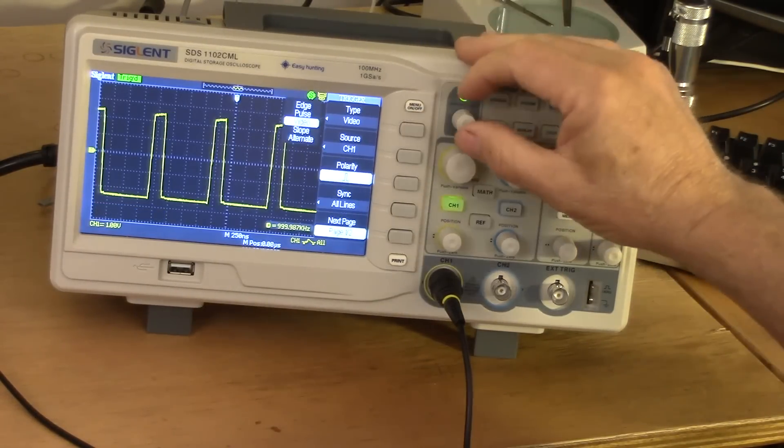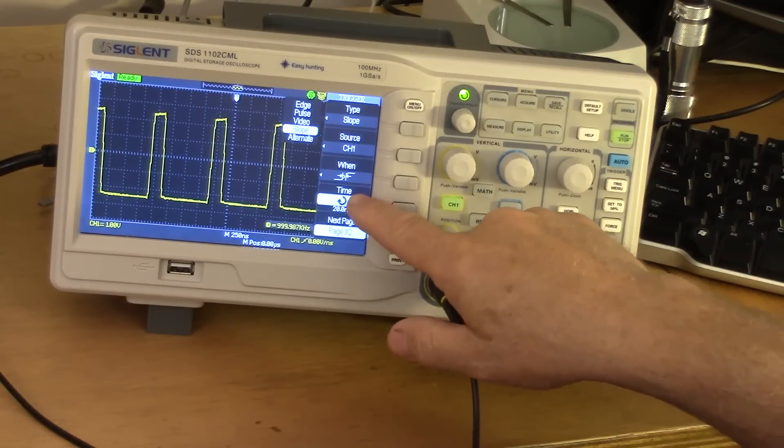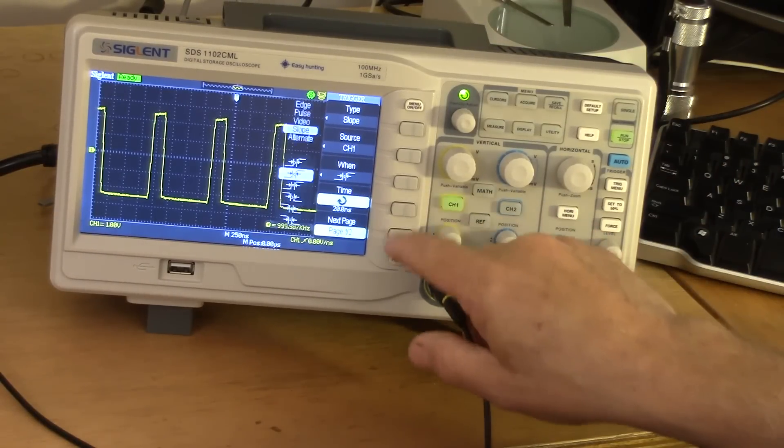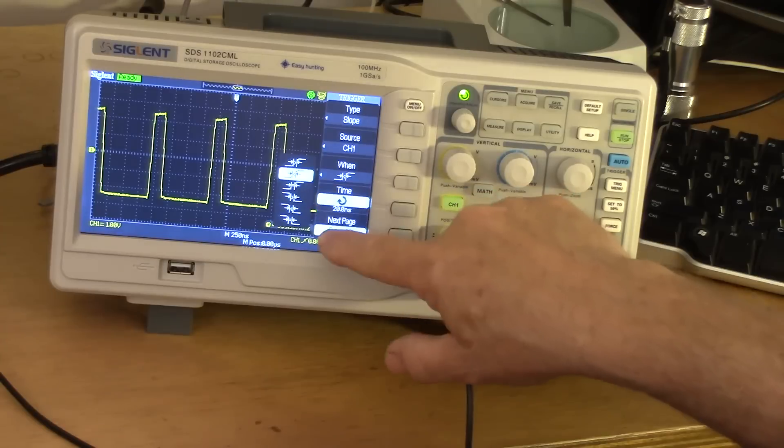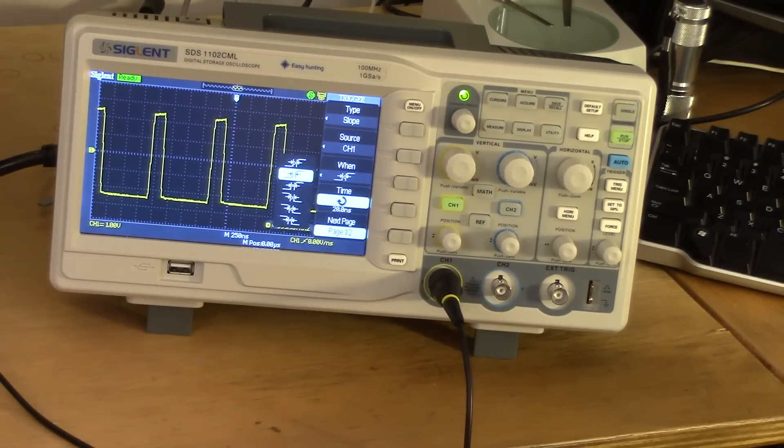There's a similar feature with this slope triggering mode, where here you can set it to trigger on a rise time or fall time exceeding or being less than some value that you set in. Again, it's a very nice and useful feature for us digital people.